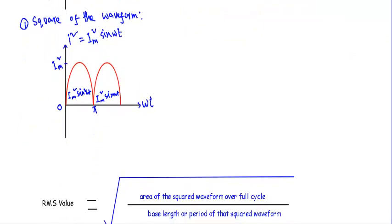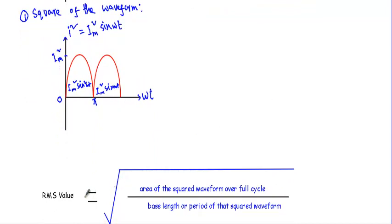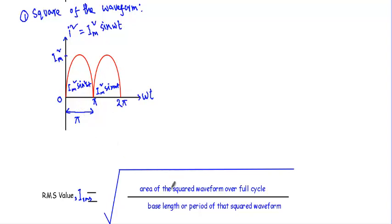We calculate the RMS value of any alternating quantity using this formula: IRMS equals the square root of the area of the squared waveform over a full cycle divided by the period of that squared waveform. The full cycle of this waveform is 2π, because after 2π the same waveform repeats. So 2π is the period, and in the numerator I must calculate the area of the squared waveform over that full cycle.